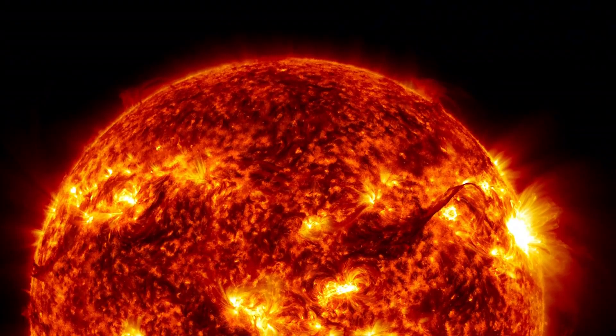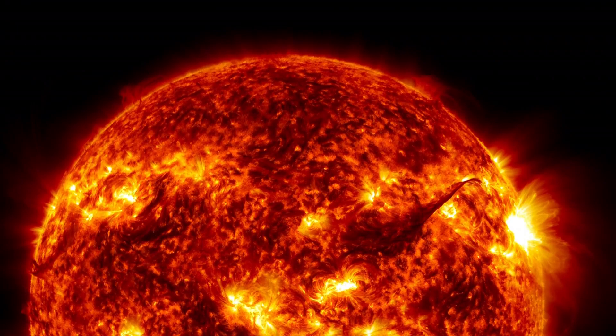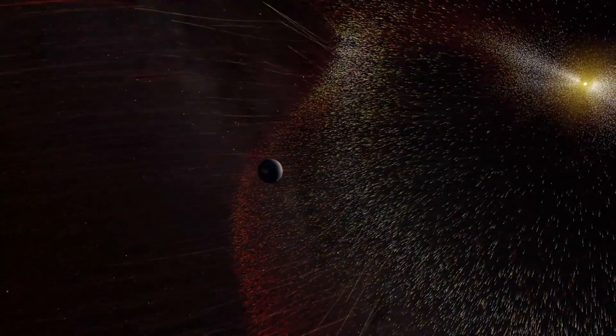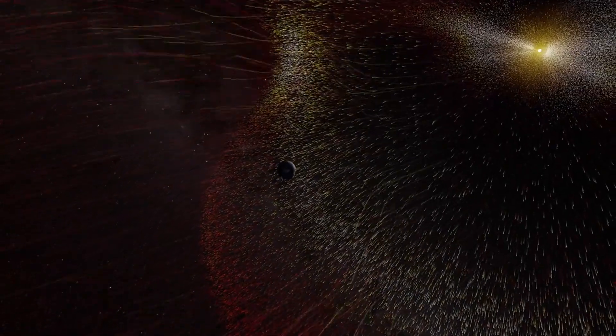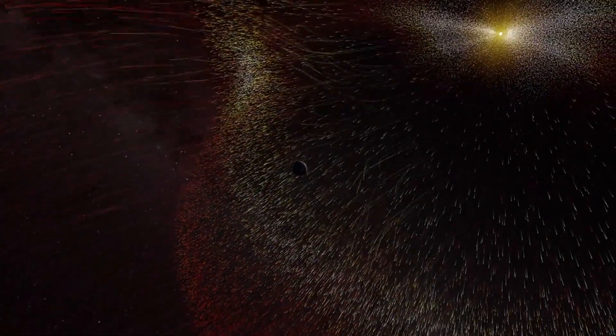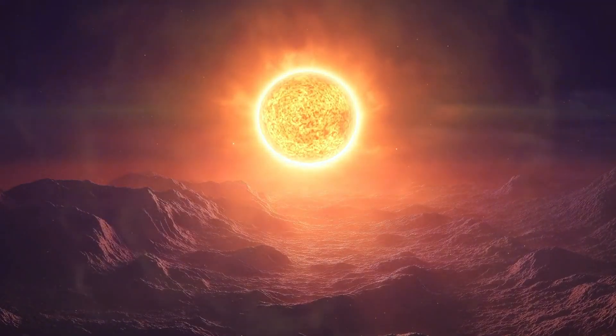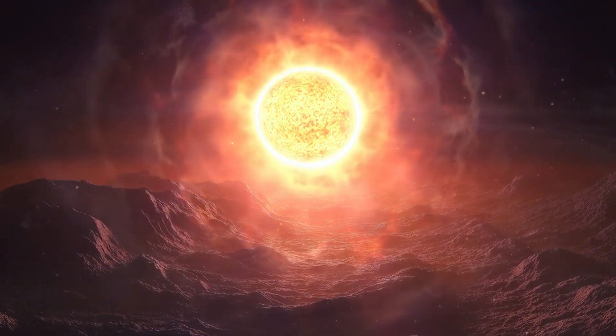Magnetic field instability also drives solar flares and coronal mass ejections. When magnetic field lines become twisted and unstable, they reconnect, releasing massive bursts of plasma and energy. They travel through space, sometimes reaching Earth.